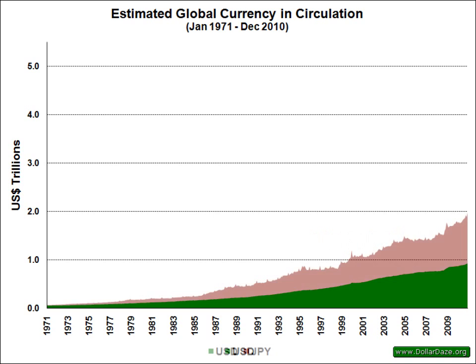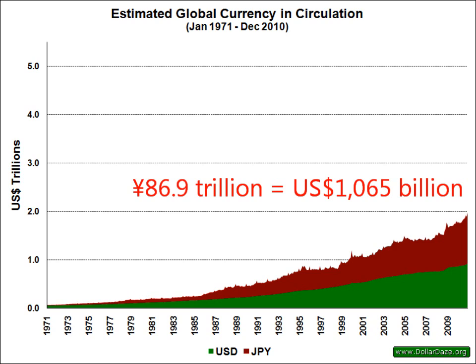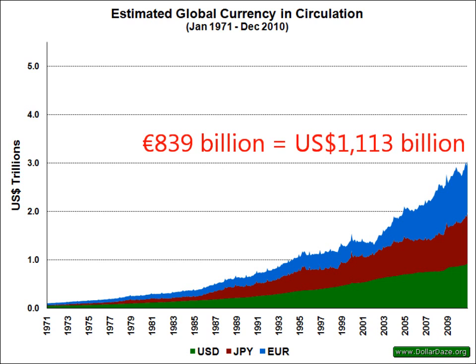Our next currency is the Japanese yen. Over 86 trillion yen circulates among the public, representing an amount equivalent to more than 1 trillion U.S. dollars. The euro is represented in blue — there is just fewer than 840 billion euros in circulation, equivalent to 1.1 trillion U.S. dollars.